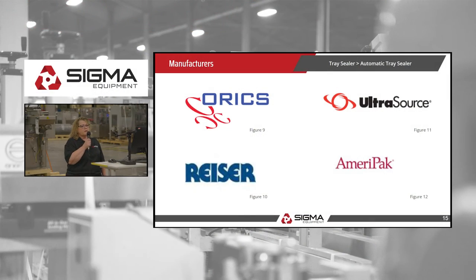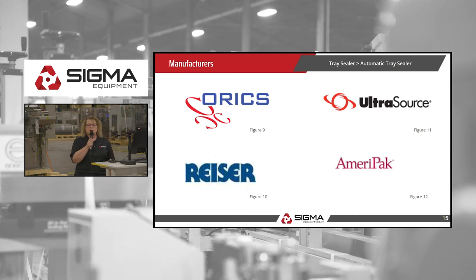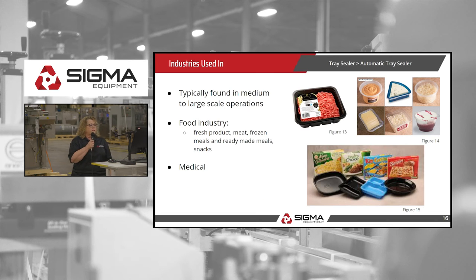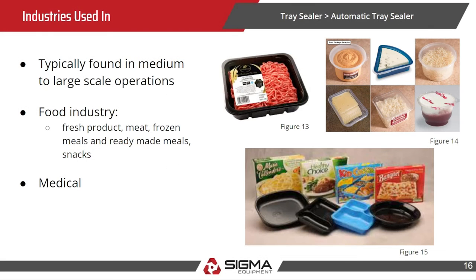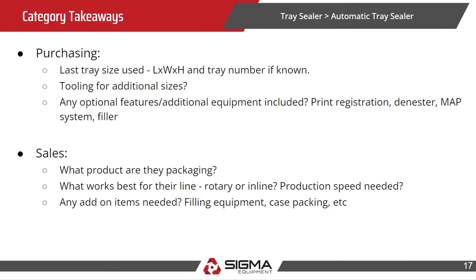The manufacturers that we prefer are Oryx, Riser, Ultra Source, and Ameripac. These machines can typically be found in medium to large scale operations, mainly in the food industry. You can see examples of meat trays, cheese slices in a tray, potato salad, and frozen dinners.